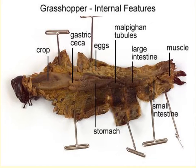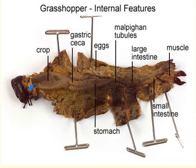If you open up a female grasshopper, everything will be covered with a large yellow mass of ovaries and eggs, which you'll need to push to the side. Once you've done that, find the esophagus at the top, which leads from the mouth to the crop — the crop functions to store food. Under the esophagus, you may also see small grayish grape-like clusters of salivary glands.